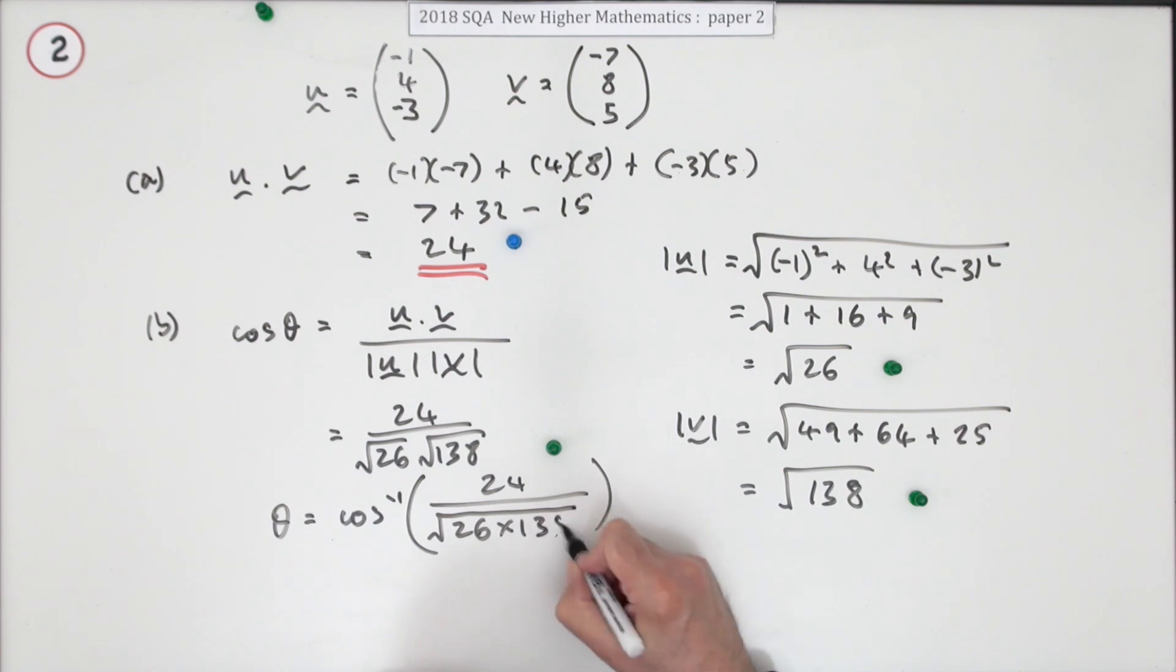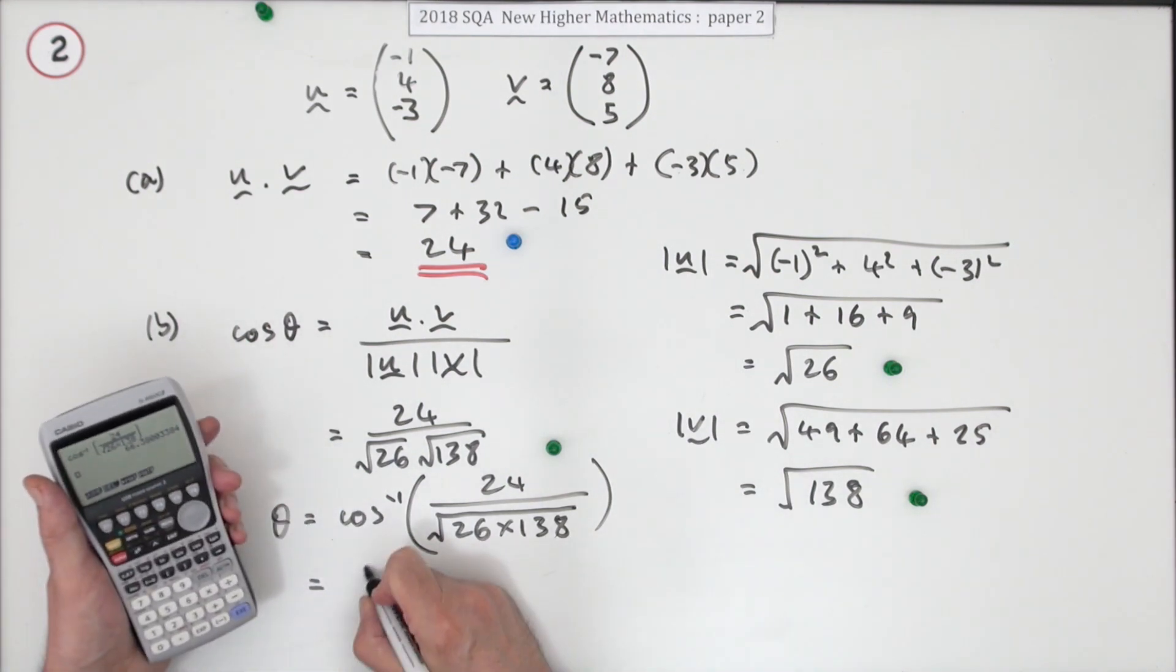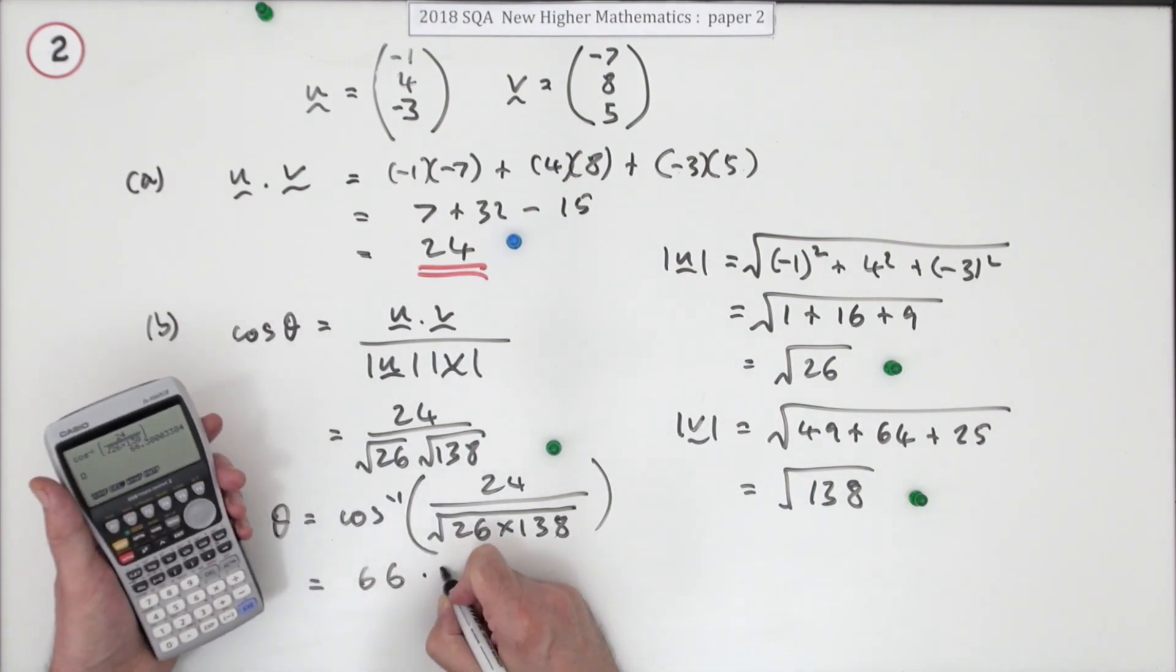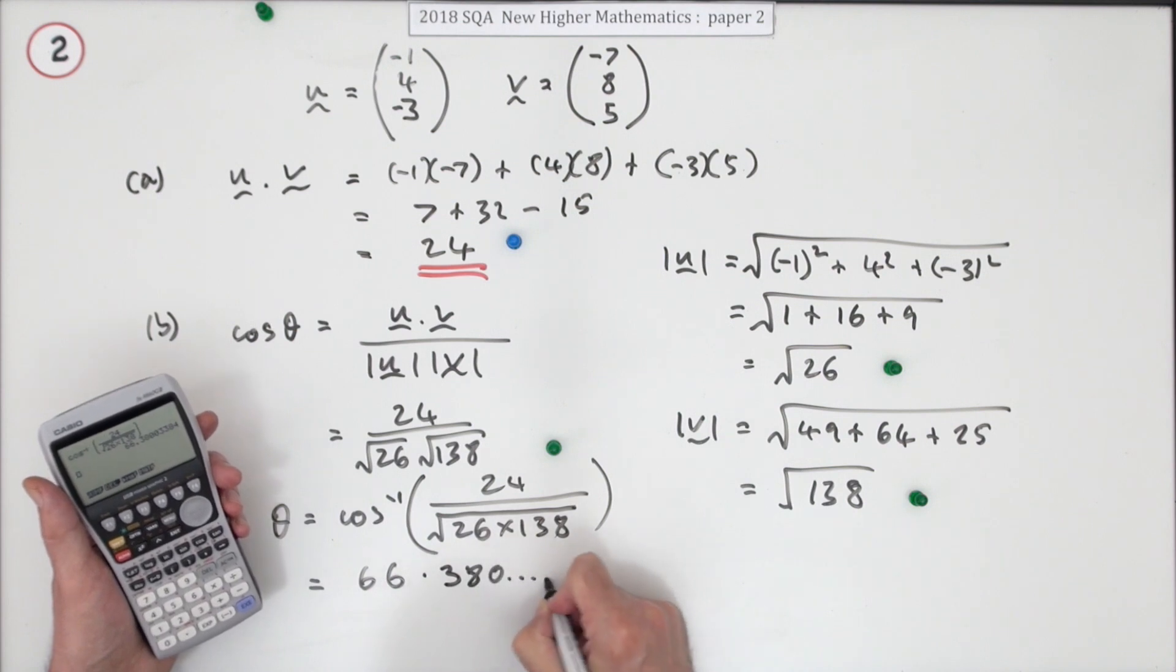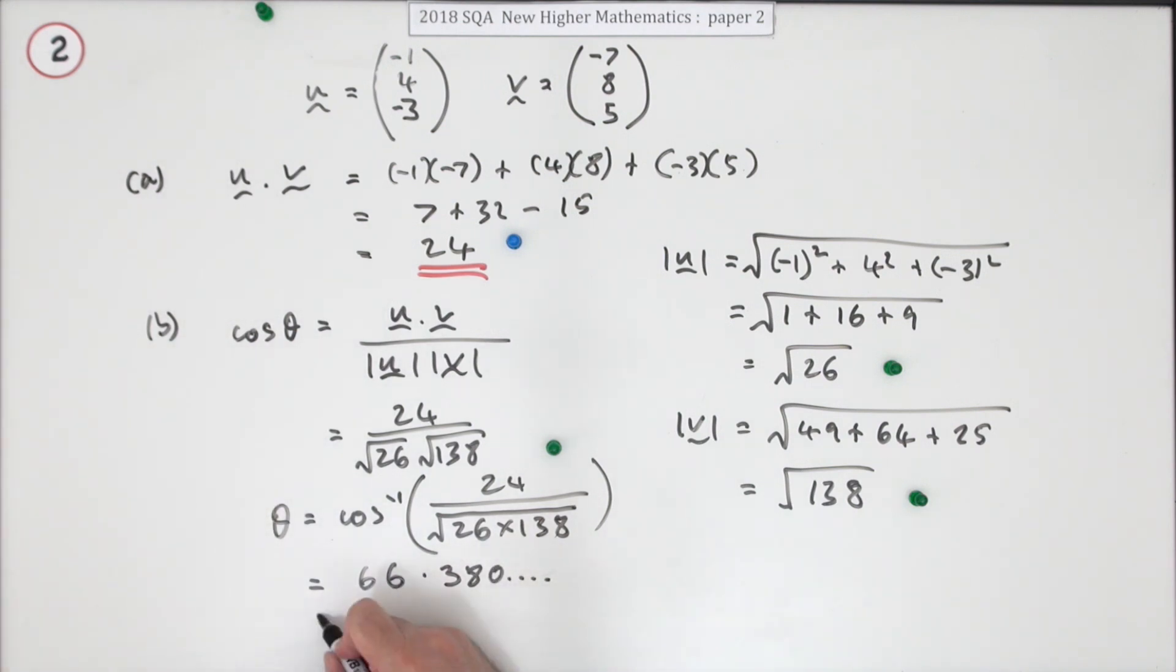Press the buttons and when you press the button you get 66.380 and so on. Normally with degrees you give it one decimal place: 66.4 degrees.